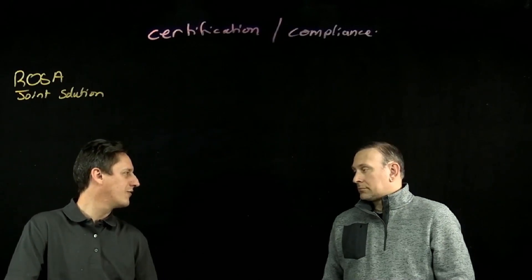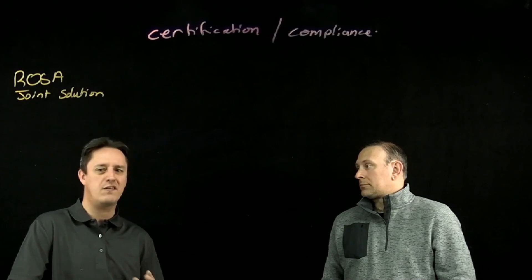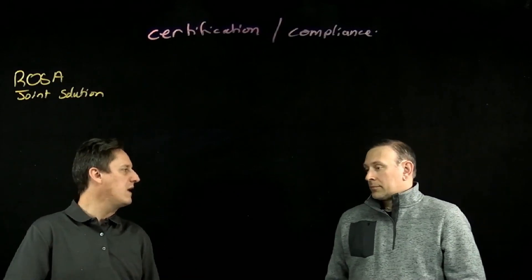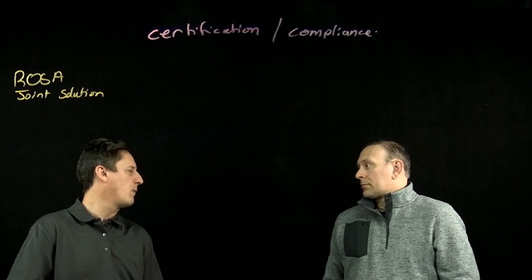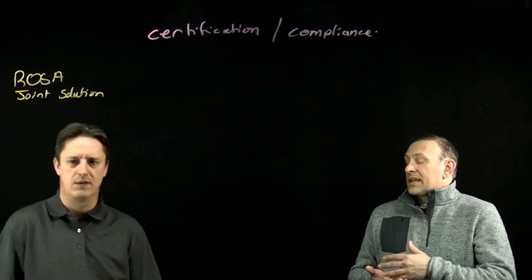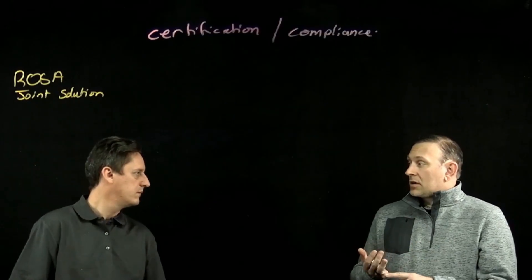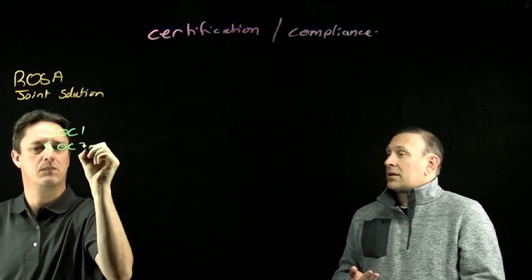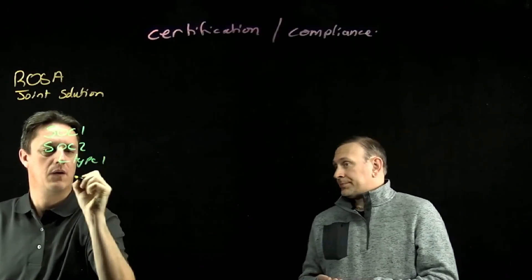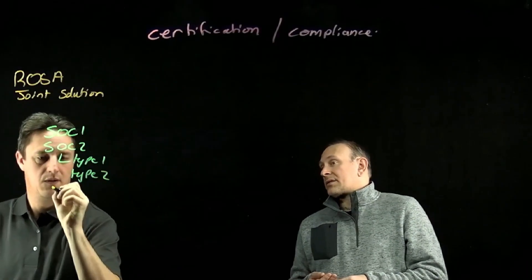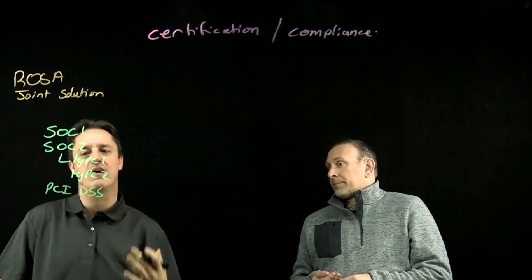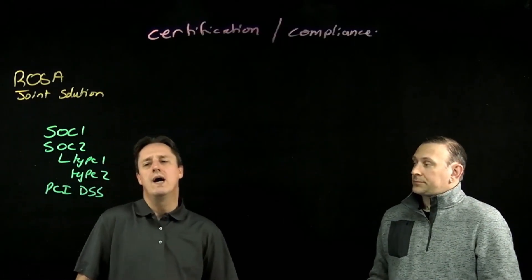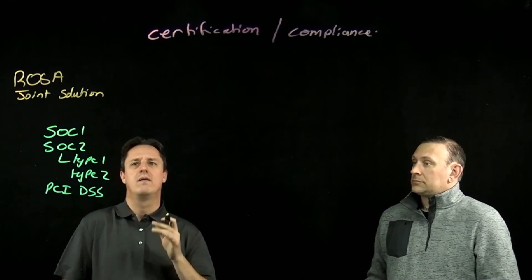In terms of certifications, many of our customers are sitting in a public sector context. What certifications does ROSA already have in place that might be meaningful to, say, a financial institution or somebody in the public sector space? So, a lot of them are going to be the ones that AWS already supports. We're talking about things like SOC 1, SOC 2, Type 1, Type 2, and PCI DSS.